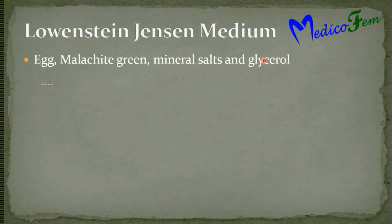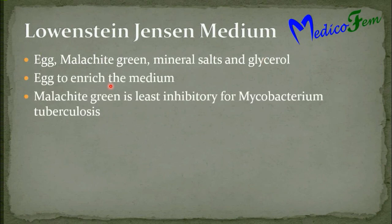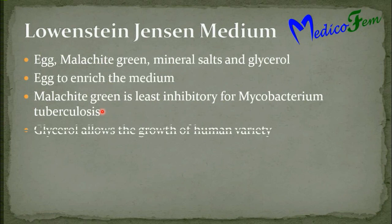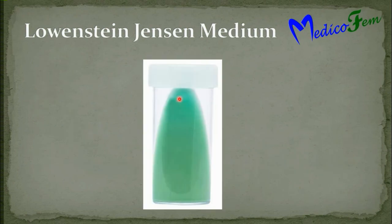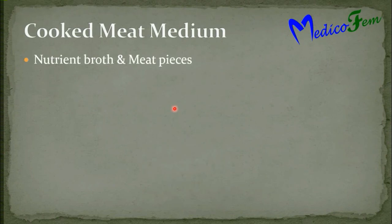Lowenstein-Jensen medium contains egg, malachite green, mineral salts, and glycerol. Egg enriches the medium. Malachite green has less inhibitory effect on Mycobacterium tuberculosis, so it inhibits other mycobacteria apart from tuberculosis, like Mycobacterium bovis. Glycerol allows growth of the human variety of Mycobacterium tuberculosis only. So it is a highly selective medium. It is sterilized by inspissation and used for growth of Mycobacterium tuberculosis of human variety. This is the slant containing Lowenstein-Jensen medium.